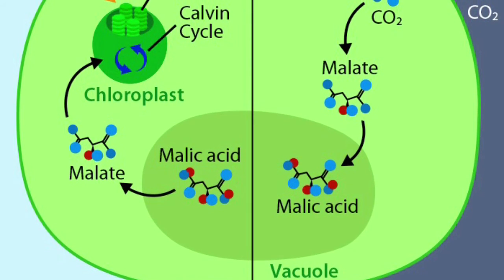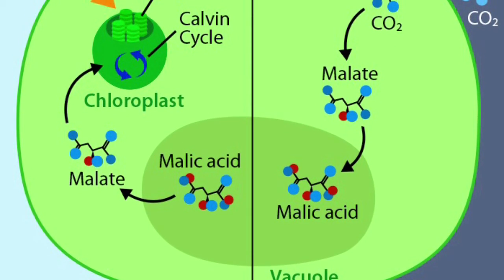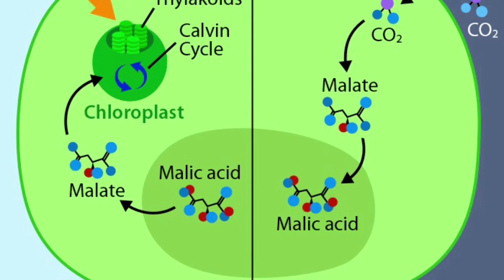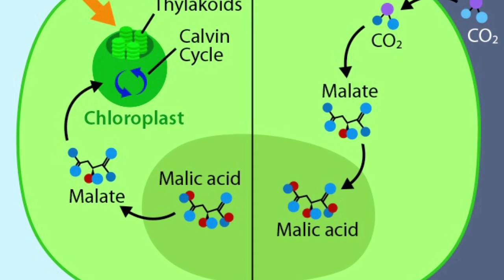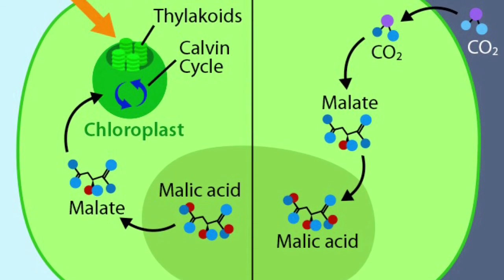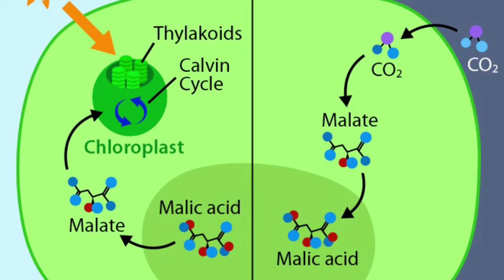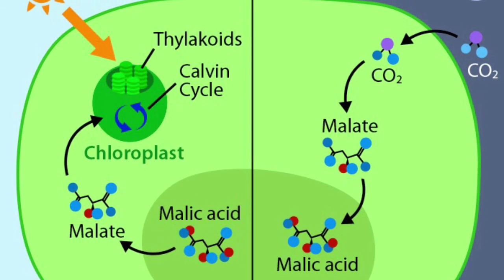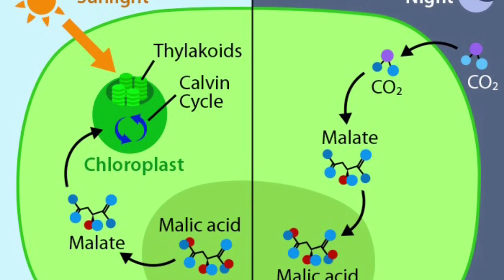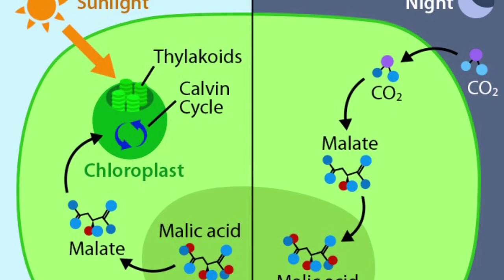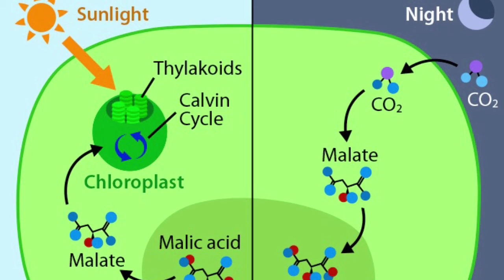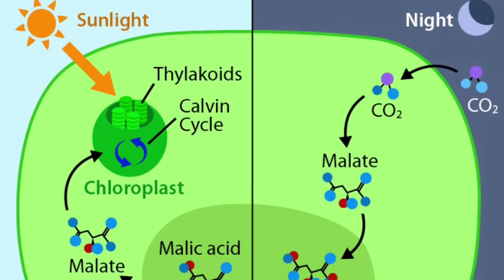In the daylight, CAM plants do not open their stomata, but they can still photosynthesize. That's because the organic acids are transported out of the vacuole and broken down to release CO2, which enters the Calvin Cycle. The teacher concludes that this answers the student's question, and the student agrees.